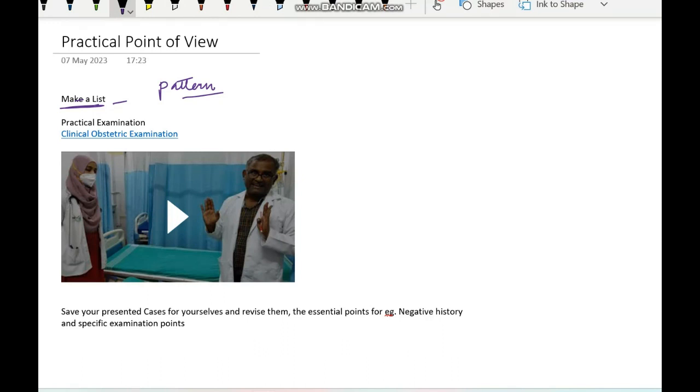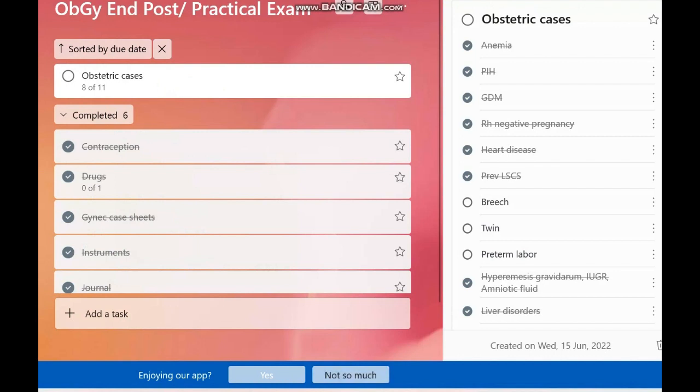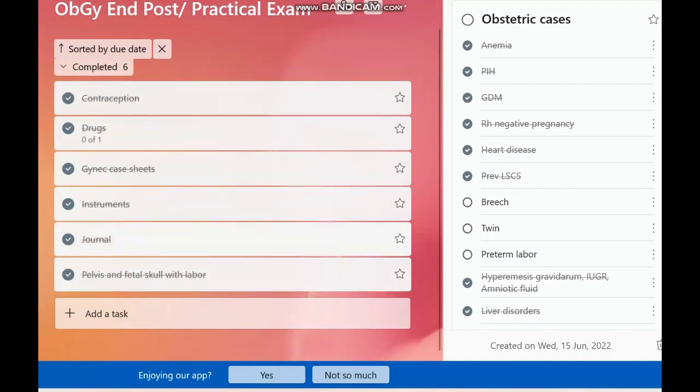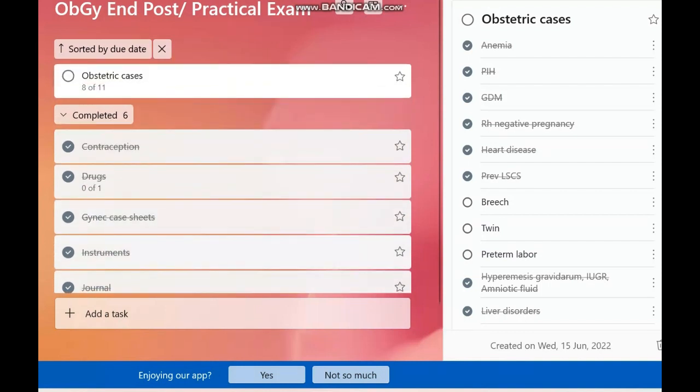The list which I'm talking about is, for example, this is my list which I had made for myself. This is in my OBGYN post-practical examination. You can see the date here is 15 June 2022, so that is when I had my end post-examination. I had my own list of what I had to prepare. So there was these obstetric cases, then there was contraception, drugs, diagnostic sheets and cases, instruments. Obviously I had to complete my journal and my pelvis and fetal skull with labor part because that's also a part which is asked in examinations. So first of all I made my list. Under the obstetric cases you can see I have this entire list—anemia, PIH, GDM, restricted growth case, previous LSCS.